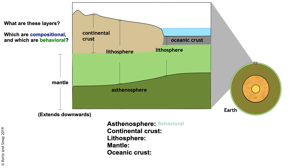The asthenosphere is a behavioral layer — its behavior characterizes it as ductile. That is, it bends or flows and stays in that new position when exposed to stress. Continental crust is compositional. It has a unique composition compared to the other compositional layers.